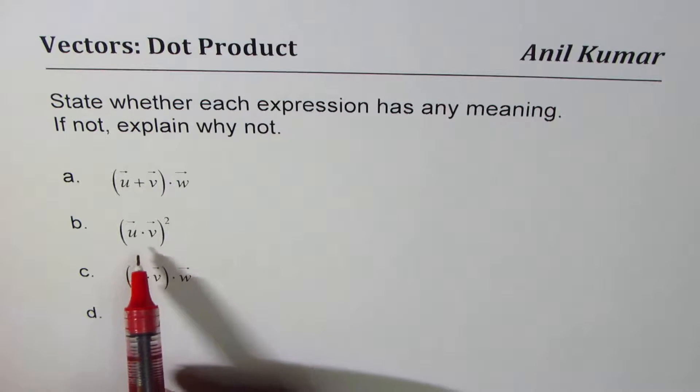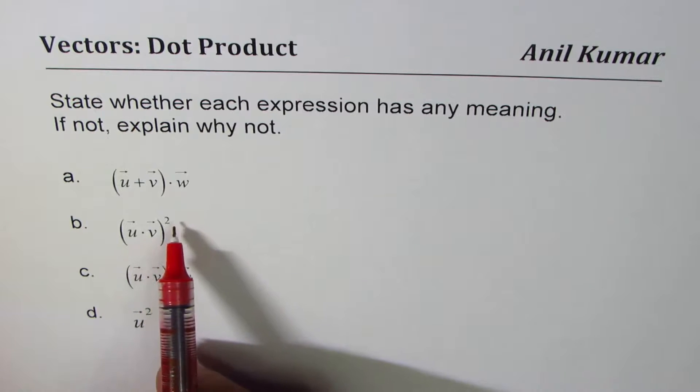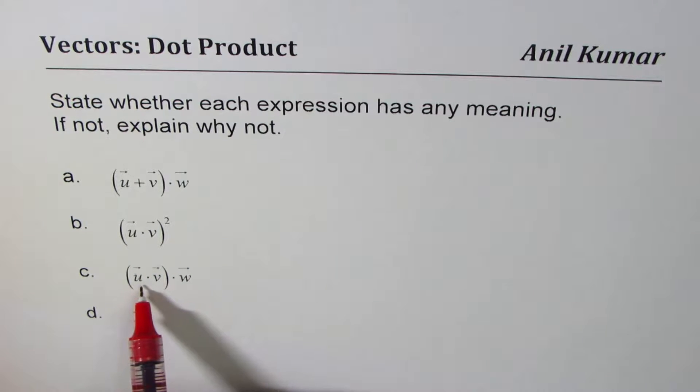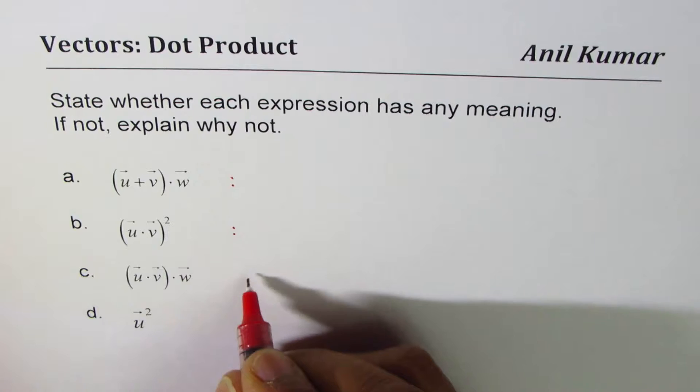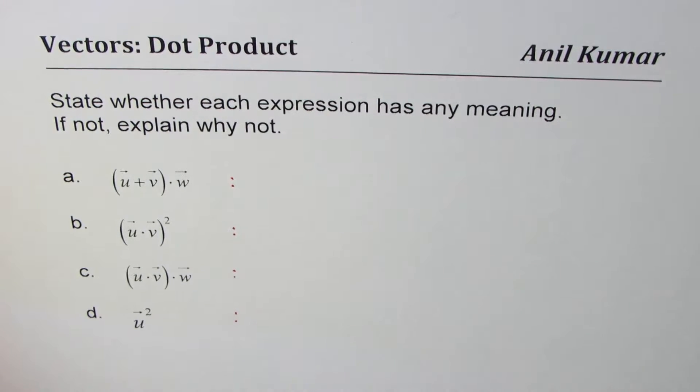Yes or no. If it doesn't have a meaning, you have to explain why. The second one is we have dot product of two vectors u and v, and then we square it. Then we have dot product of two vectors u and v, and then dot product with vector w.